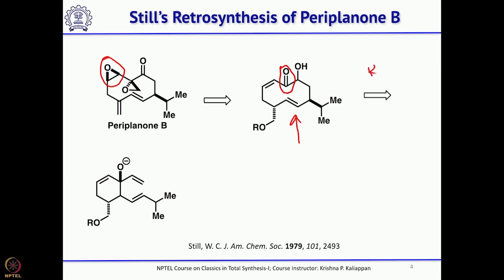The anionic oxy-Cope rearrangement is the key reaction. When you perform the anionic oxy-Cope rearrangement, you generate an enolate. If you then add MCPBA, you get the corresponding alpha-hydroxy ketone — this is called Rubatom oxidation. So a combination of anionic oxy-Cope followed by Rubatom oxidation gives the corresponding alpha-hydroxy ketone.